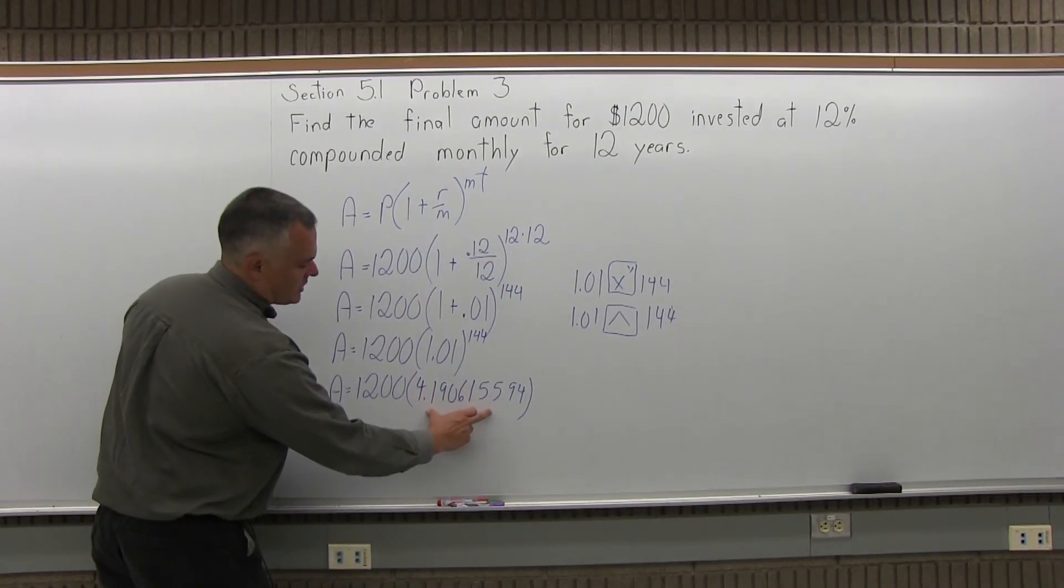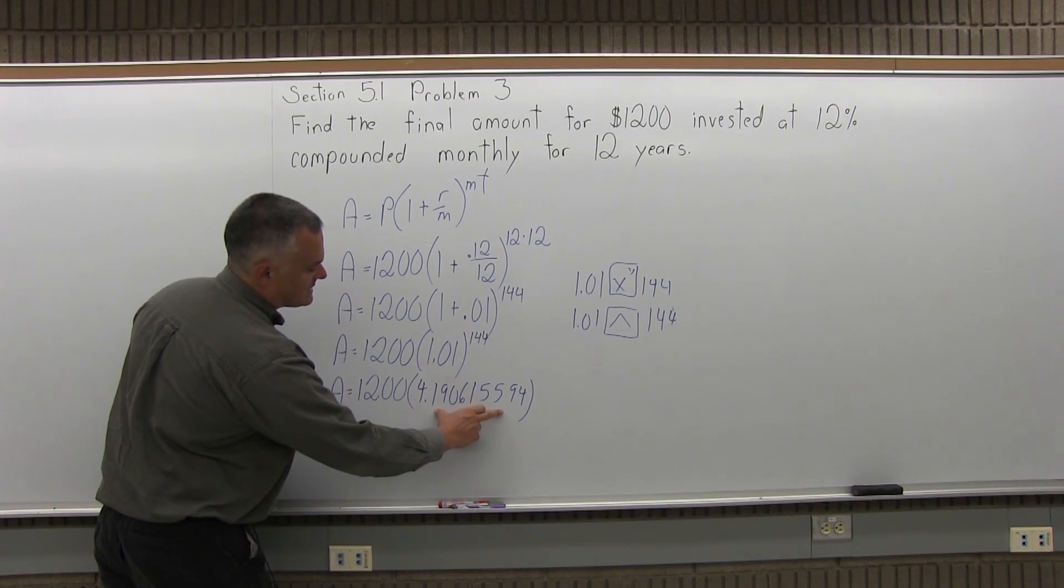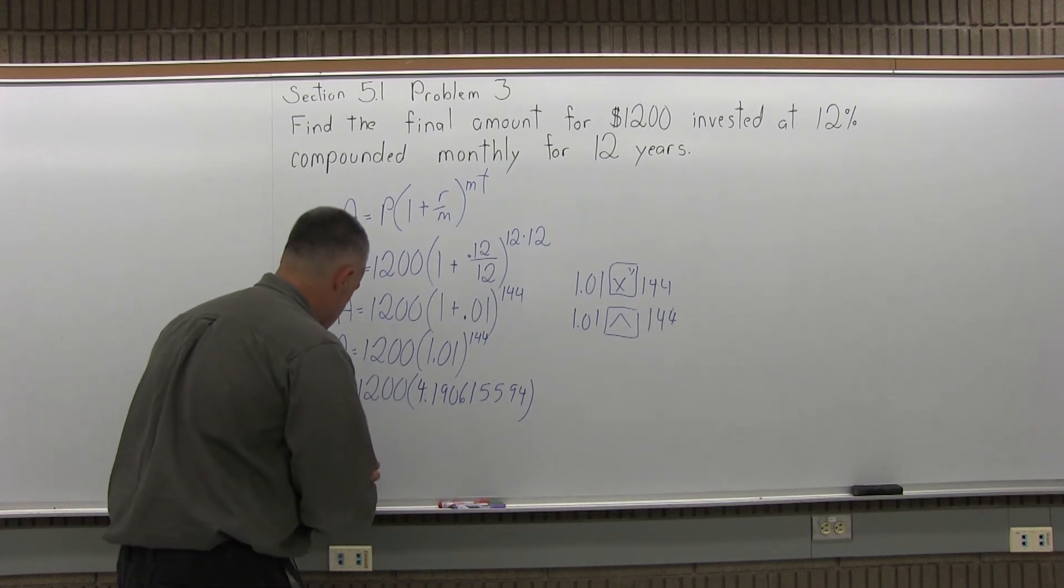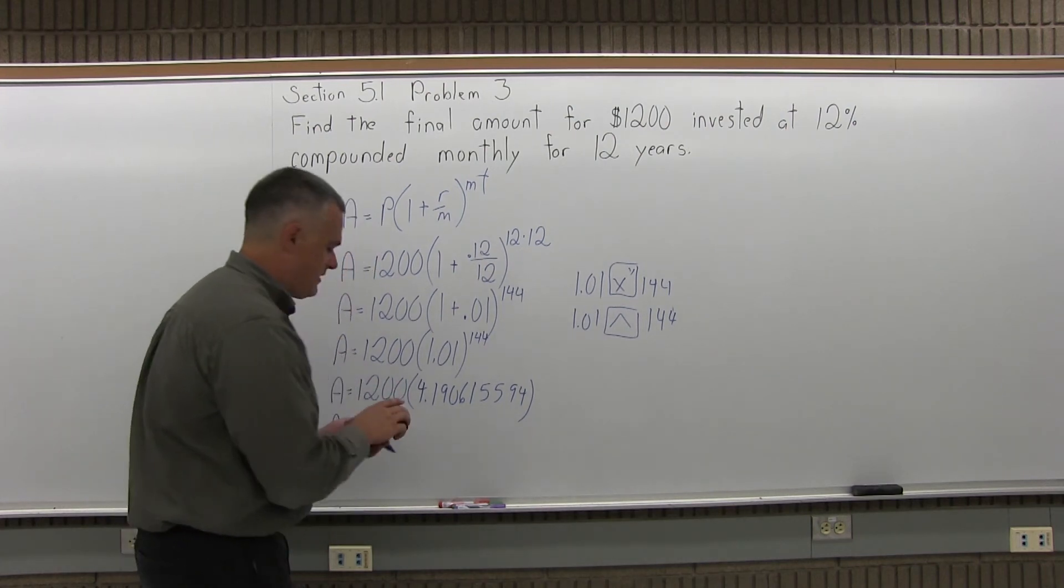So I'll just leave that number on the screen, the 4.1906 whatever, and I'll multiply it times the 1200 that I had written in front of the parentheses, and that will give me the final answer.